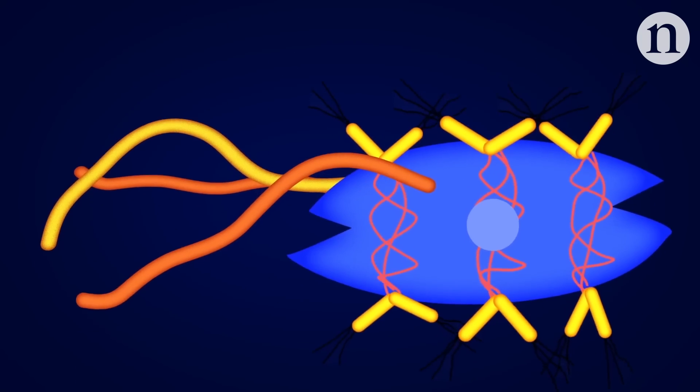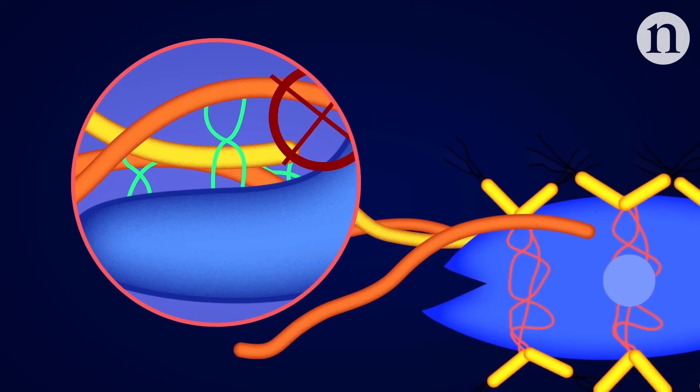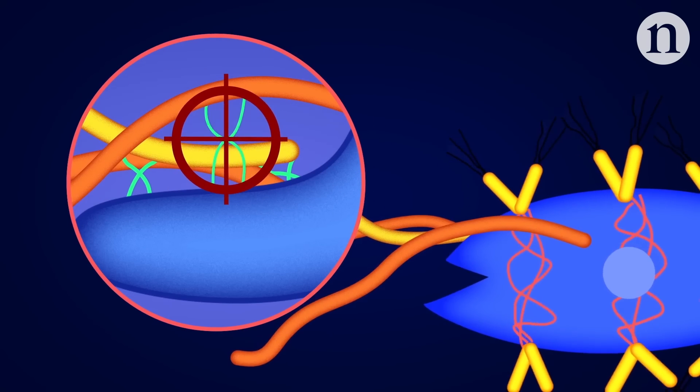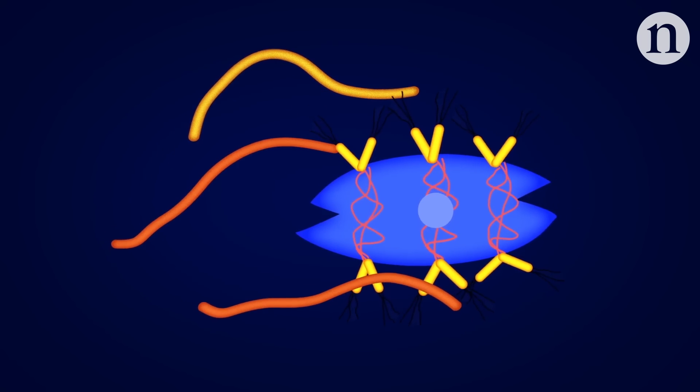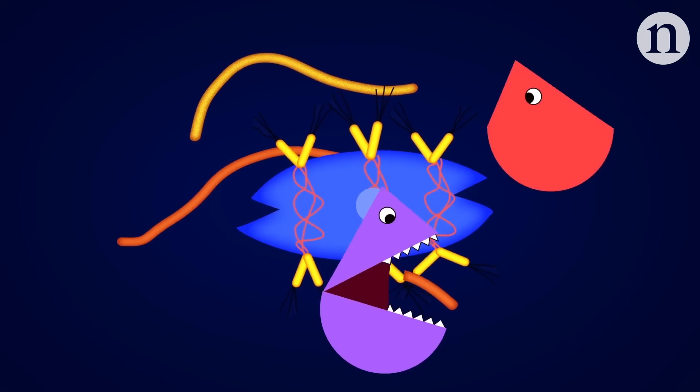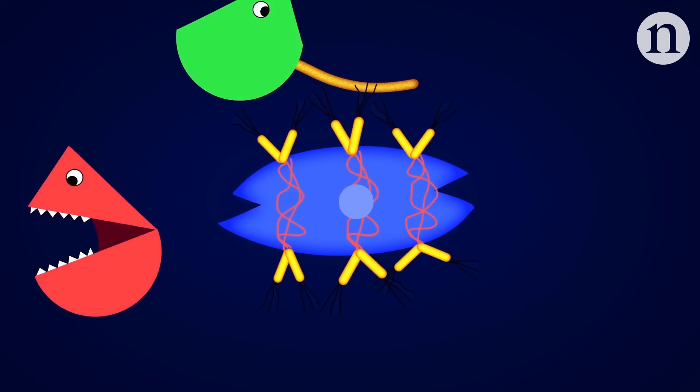Another set of drugs could inactivate myofibroblasts by targeting receptors on their surface called integrins that allow them to interact with other cells and the extracellular matrix. Multiple drugs that work this way are currently being explored and will enter human trials soon.